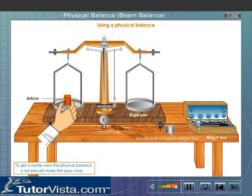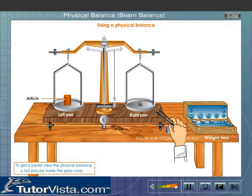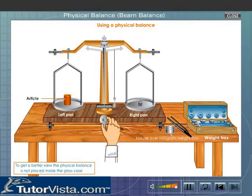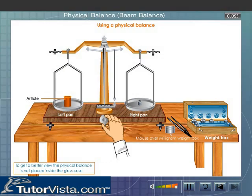Place standard weights in the right hand side pan till the pointer oscillates equally about the zero mark when the central rod is raised. Use forceps provided in the weight box.